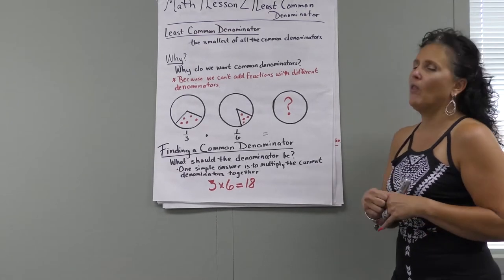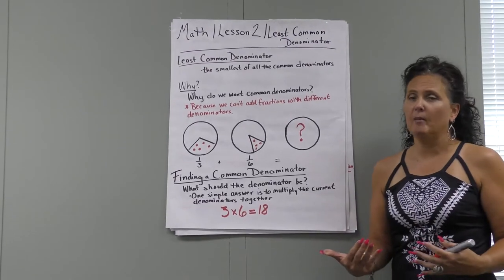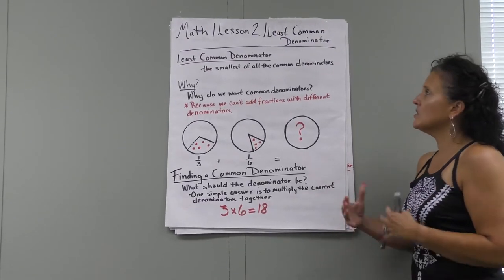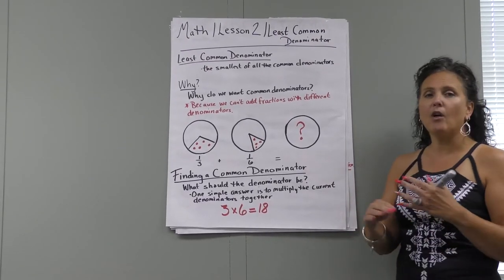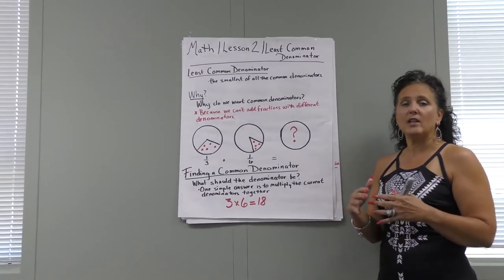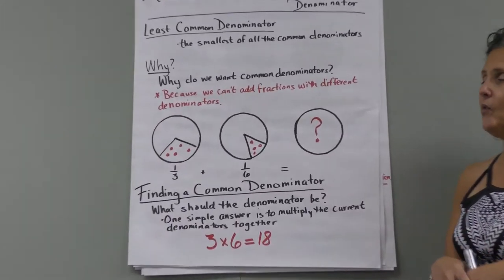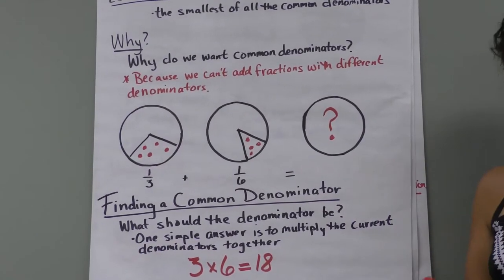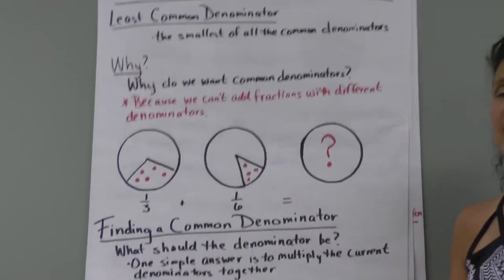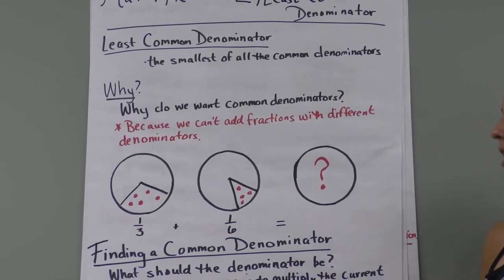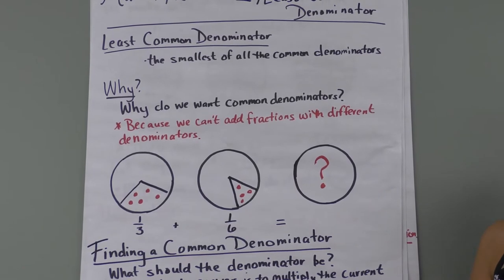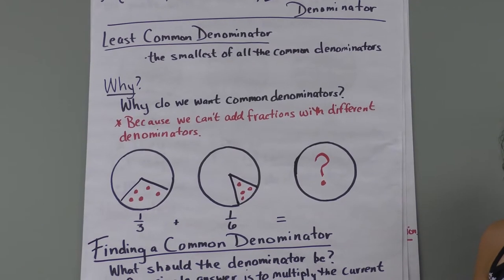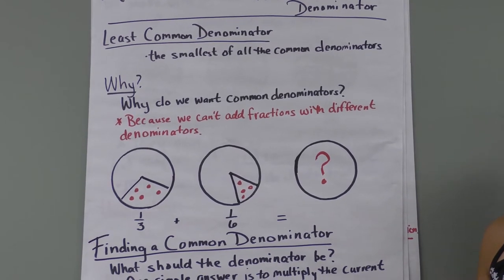So first of all, let's look at what is the least common denominator. It's the smallest of all of the common denominators — that's the one we're looking for, the one we have to find. Why do we want to find the least common denominator? Because we can't add fractions with different denominators. They have to have the same denominator, so we have to find the least common denominator.